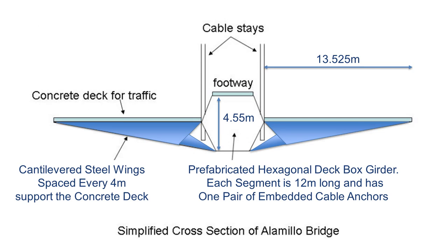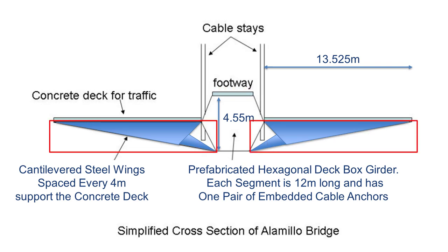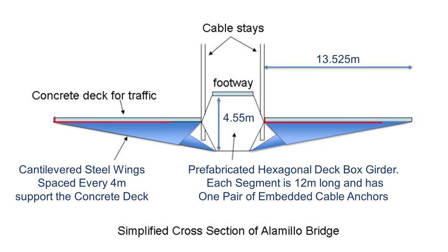This simplified cross section of the deck shows its three main components. Its center is the spine of the deck, which is a steel box girder that runs the length of the bridge. Its cross section is hexagonal with a height of 4.55 meters. On both sides of the steel box girder there are steel wings spaced every 4 meters that support the concrete deck pavement. The deck is supported by pairs of cables spaced every 12 meters that run through prefabricated anchors in the box girder.